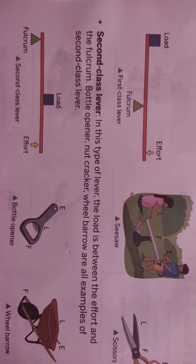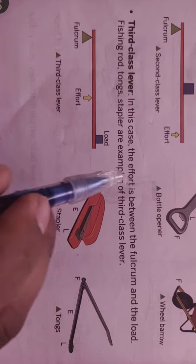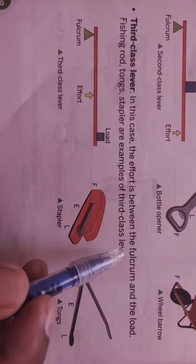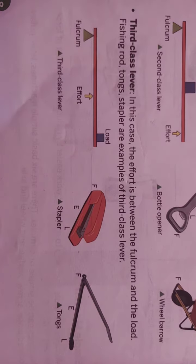Now we have come to the last kind of lever, that is the third class lever. In this case, the effort is between the fulcrum and the load, so effort is in the middle. Fishing rod, tongs, stapler are examples of third class lever.